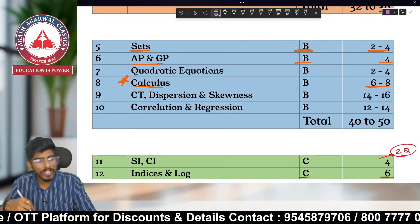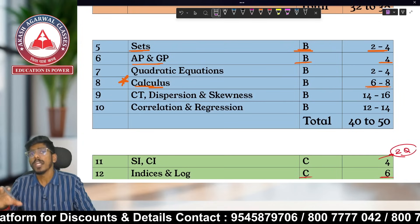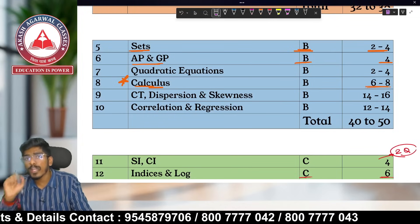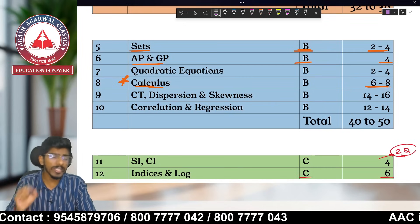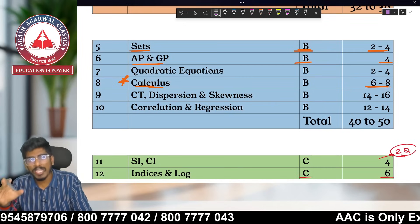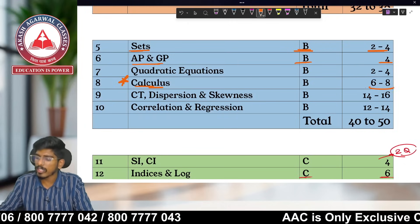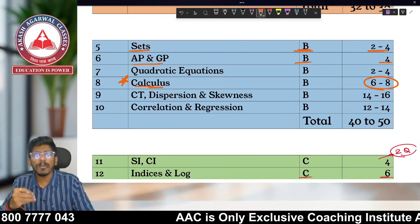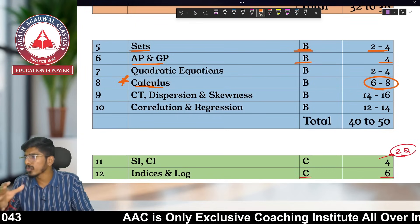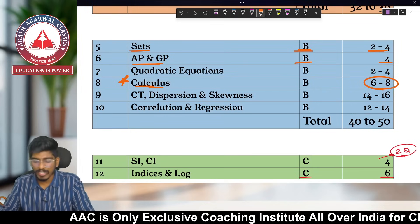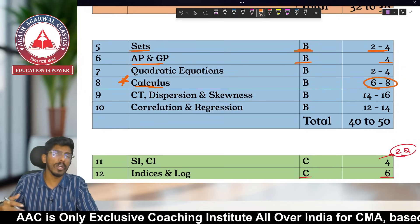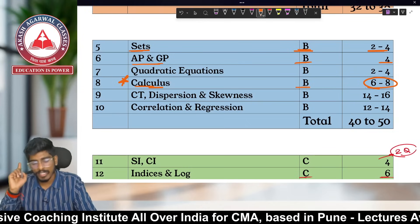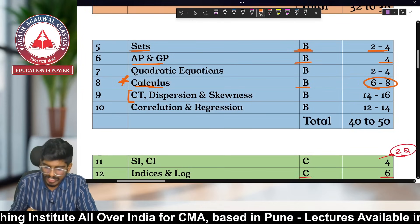In the June 2025 paper, approximately four to five questions were asked from Calculus, and in December 2024, four questions were asked. That's why we rate it at six to eight marks. Although Calculus is trickier and many students tend to leave it, we've kept it in Category B because the number of questions being asked is increasing.